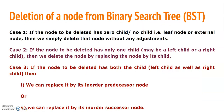Now there are three different cases. The first case is if the node to be deleted has zero children — it means there are no children present. Such a node is called a leaf node, or it is also called an external node. In this case, if it is a leaf node, we simply delete that node without any adjustments.